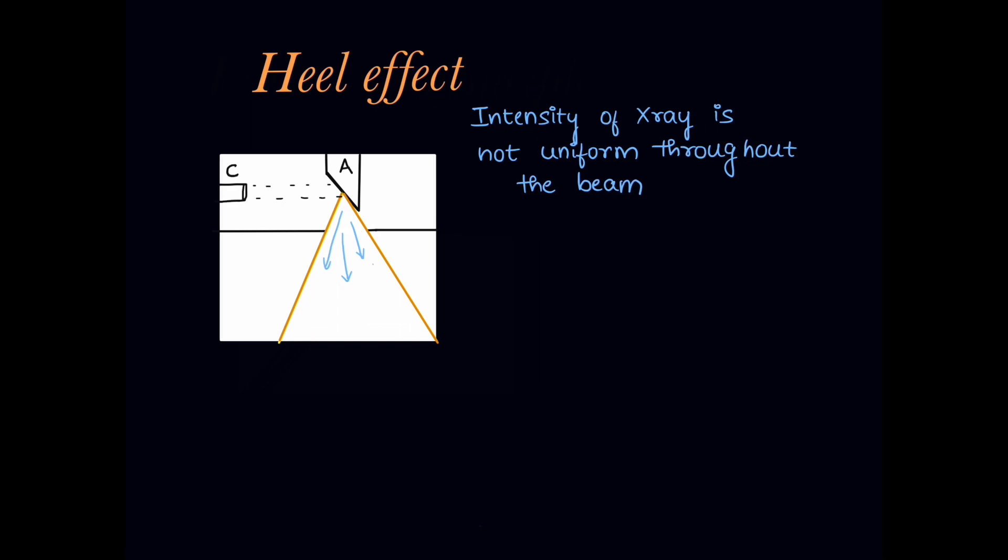Here is the cathode, anode and once the primary beam is produced there are two sides for the beam, anode side of the beam where it is less intense and cathode side of the beam will have more intense x-rays.